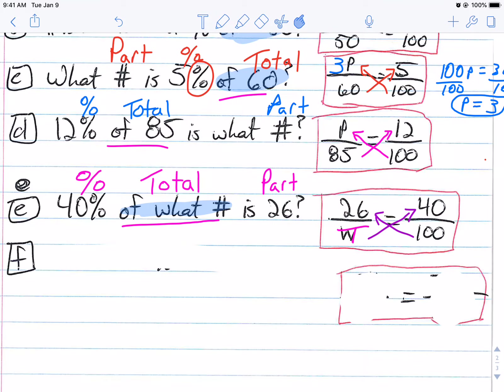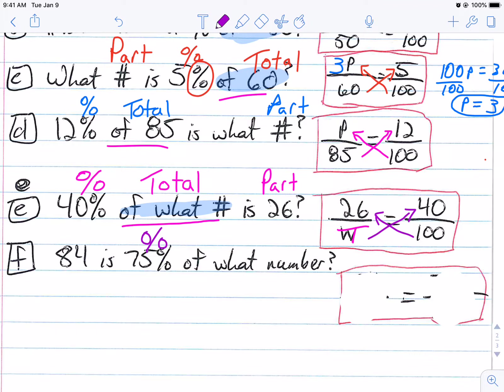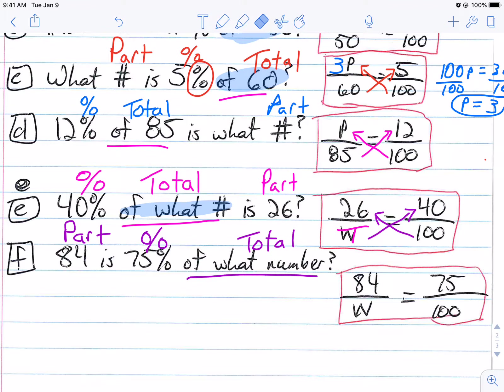Last one: 84 is 75% of what number? This is obviously the percent. 'Of what number?' — that's got to be the total. And that means 84 is the part. So it's going to be 84 over W — or 84 over T for the total — equals 75 over 100. That's your setup. It's very important that you can set this up before you can solve it. Appreciate it, take care, we'll see you again.